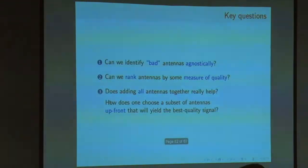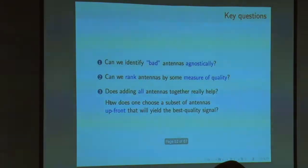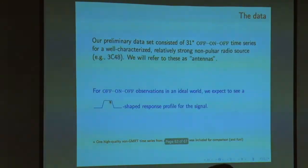But data rates are high and individual signals from individual antennas can't be stored for posterity and you can't make a decision that I want to drop this antenna and retain that antenna after making observations. It has to be done on the fly. You need an upfront decision. Usually, astronomers add all the signals together, hoping that things go well. The questions we tried to address: can we identify bad antennas in an agnostic fashion? Because if you can do it agnostically, you can automate it and build into the pipeline. Can we rank antennas by some kind of measure of quality? The third question was most important: adding all antennas, all antenna streams together, does it really help? How does one make an upfront decision of including which antennas and leaving out which ones?